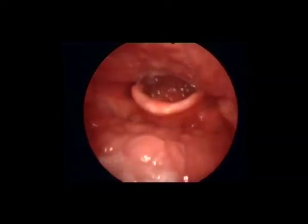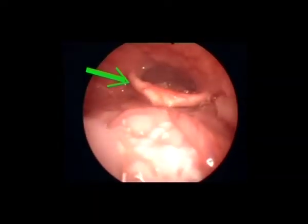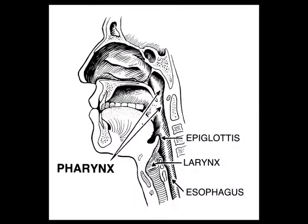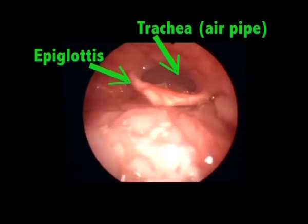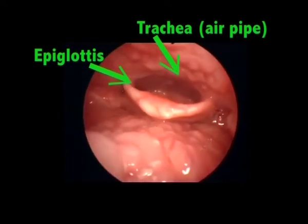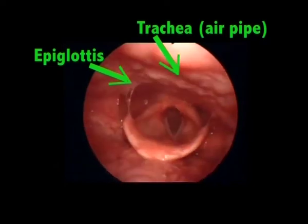The epiglottis is a small flap-shaped organ made of elastic cartilage tissue and is covered with mucous membrane. The epiglottis is attached to the entrance of the larynx. It is normally positioned up when breathing, but while swallowing, the epiglottis folds down to a more horizontal position. In this manner, it prevents food from going into the trachea and instead directs it to the esophagus, which is the posterior passage.